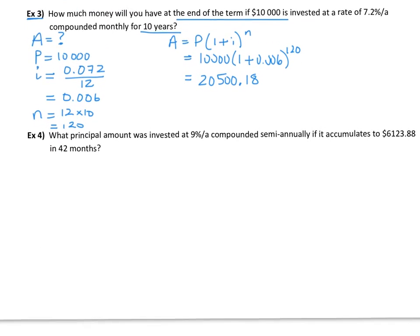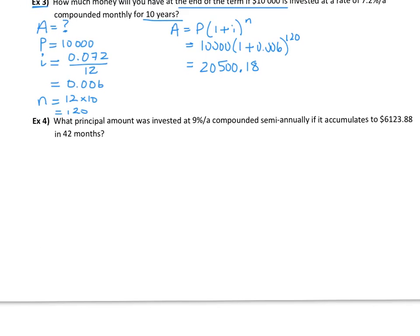Next one. What principal amount was invested at 9% per annum? So this time we're asked for the principal amount. That's our unknown. Principal is unknown this time.